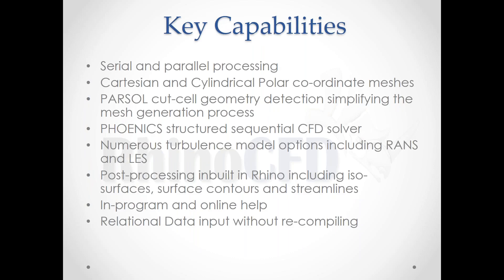Key abilities of the software include real and parallel processing for cases needing more resolution. We use Cartesian and co-polar meshes that are very easy to set up. The PARSOL cut-cell geometry means that although our cells are effectively squares or rectangles, we can detect what part of each cell is fluid and what part is solid — no need to spend hours setting up a CFD mesh. We have numerous turbulence models, built-in post-processing, in-program and online help, and relational data input called INFORM.